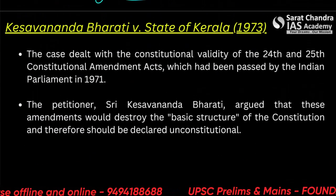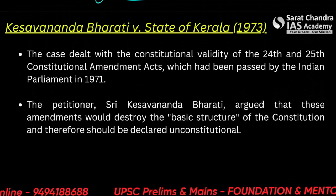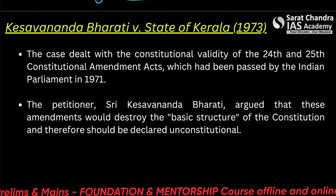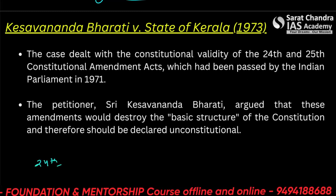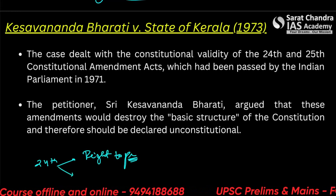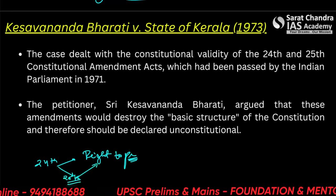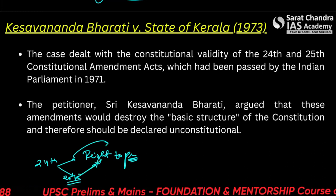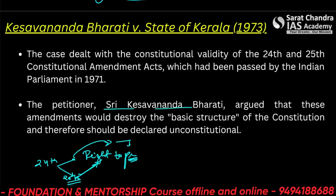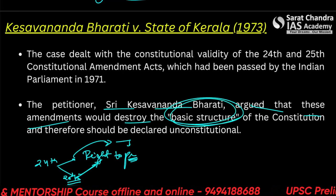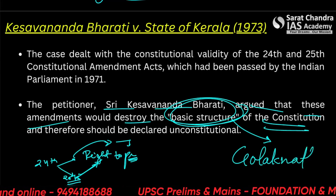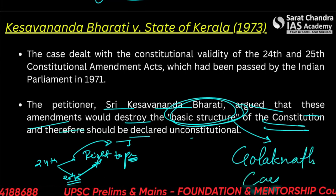The Keshwanand Bharati case dealt with the constitutional validity of the 24th and 25th Constitutional Amendment Acts passed by the Indian parliament in 1971. The 24th Amendment gave constitutional power to change fundamental rights including the right to property, while the 25th Amendment changed the right to property itself. The petitioner, Shri Keshwanand Bharati, argued that these amendments would destroy the basic structure of the constitution — a concept we had already heard about in the Golaknath case — and should therefore be declared unconstitutional.